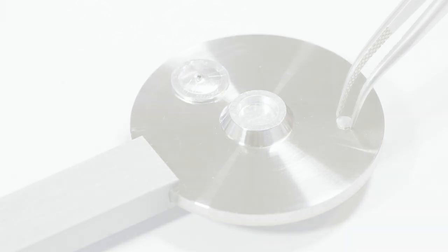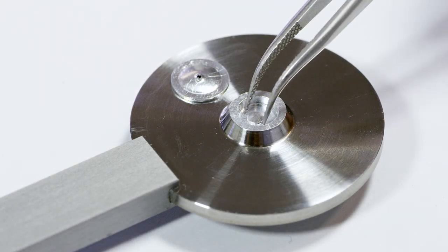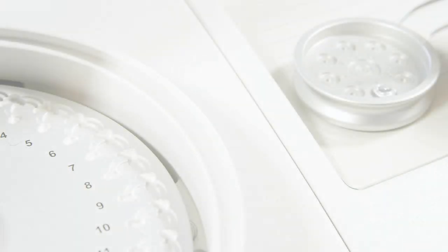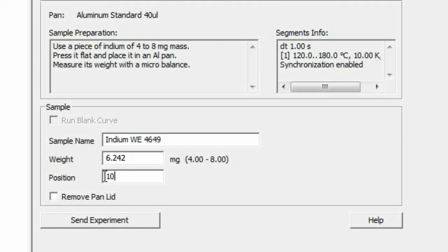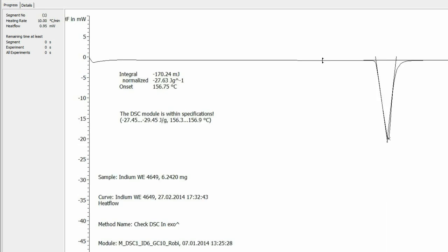You have seen how to prepare a reference substance, how to insert the sample into the DSC, how to program and start a DSC calibration, and how to evaluate the resulting curve.